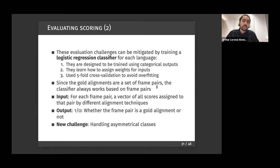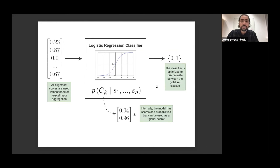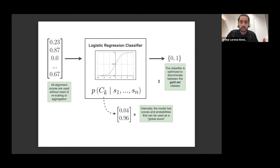The classifier output is one or zero, signaling whether the frame pair is a good alignment. A key challenge is handling asymmetric classes, since most pairs should not align. The classifier diagram shows alignment scores from different techniques (e.g., 0.23, 0.87) going in; internally the model assigns weights and probabilities that serve as an aggregated score. The output optimizes discrimination between gold and non-gold frame pairs.